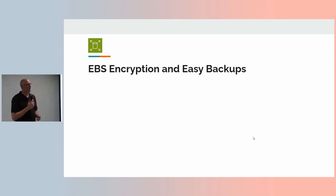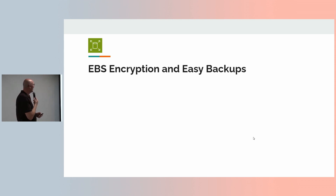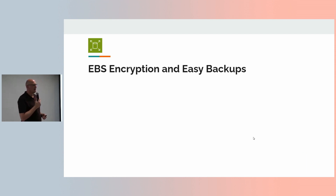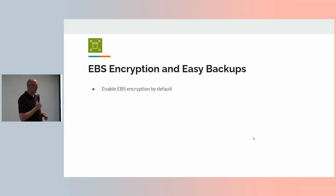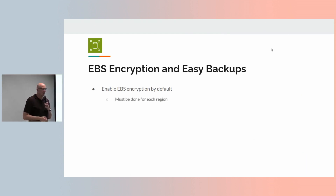EBS encryption and backups. Encryption is something you definitely want. AWS recently changed S3 to enable encryption by default. You can't yet do that automatically with EBS, but there is an option buried deep in the AWS console where you can turn on EBS encryption by default — so you don't have to tick the box when you create an instance or remember to specify it in Terraform or CloudFormation. You have to do that explicitly for every region.